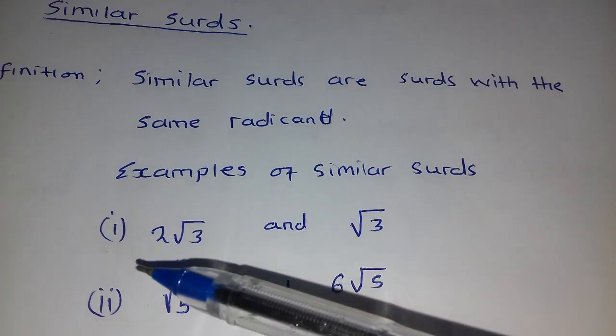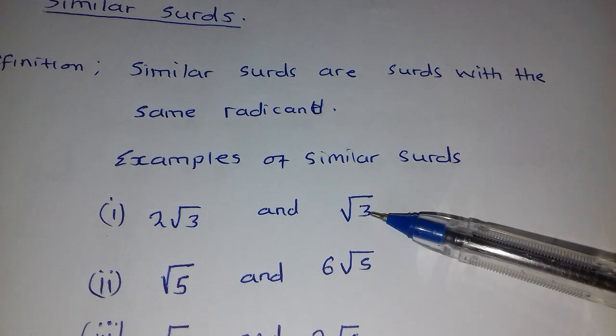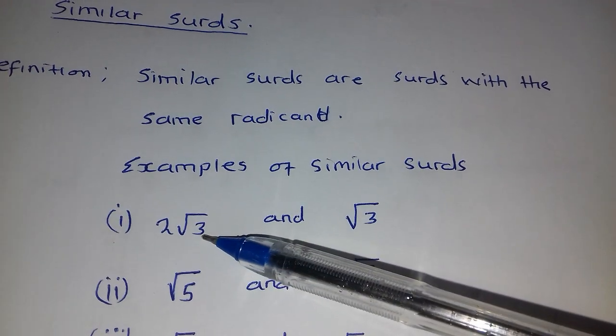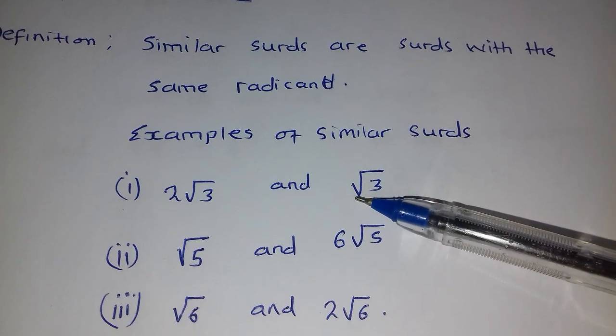Examples of similar surds we have 2 root 3 and the root of 3. When you look at this radicand and this one, they are just the same, so these two are similar surds.